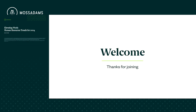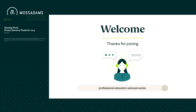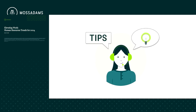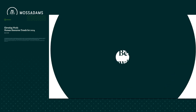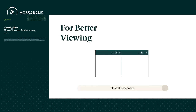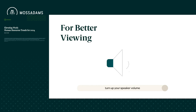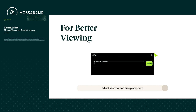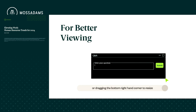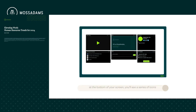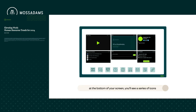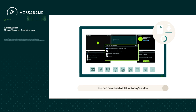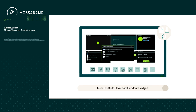Welcome, and thanks for joining. We're pleased to present our continuing professional education webcast series. You can customize how you view our presentation and interact with the presenter. For better viewing, close all other applications and turn up your speaker volume. You can adjust window size and placement or enter full screen mode using the controls at the top right of the window, or by dragging the bottom right-hand corner to resize. At the bottom of your screen, you'll see a series of icons that relate to different aspects of our session. You can download a PDF of today's slides from the slide deck and handouts widget.